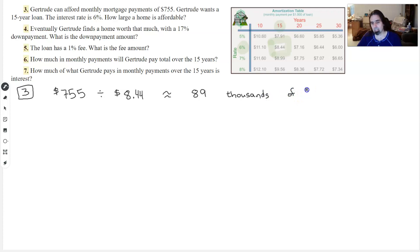Each time she wrote a check for $8.44, she got $1,000 of home size. Now that's not how we write it. We don't like to put $899,000. So we're going to say that this is $89,000.